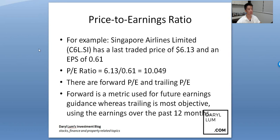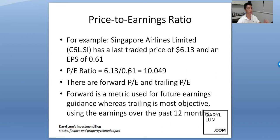Using SIA as an example: SIA has a last traded price of $6.13 Singapore dollars, traded on the Singapore Stock Exchange under ticker code C6L.SI, and has earnings per share of 61 cents. I covered how to calculate EPS in my last video. So the PE ratio is 6.13 divided by 0.61, which equals 10.049.